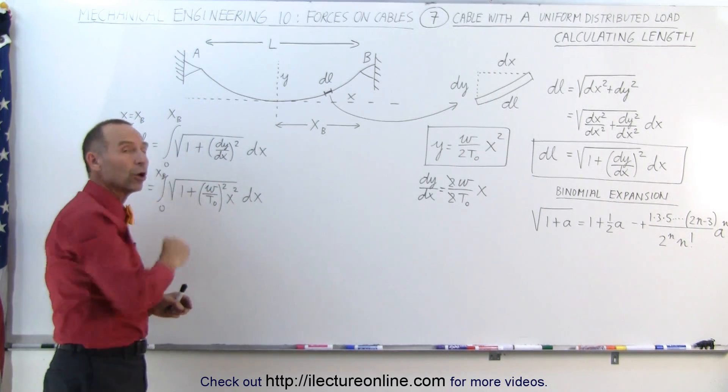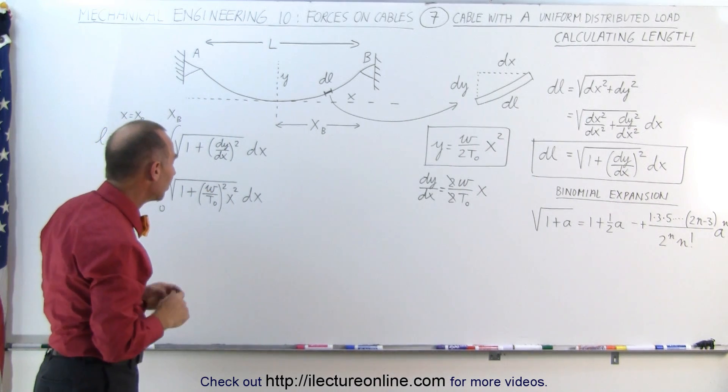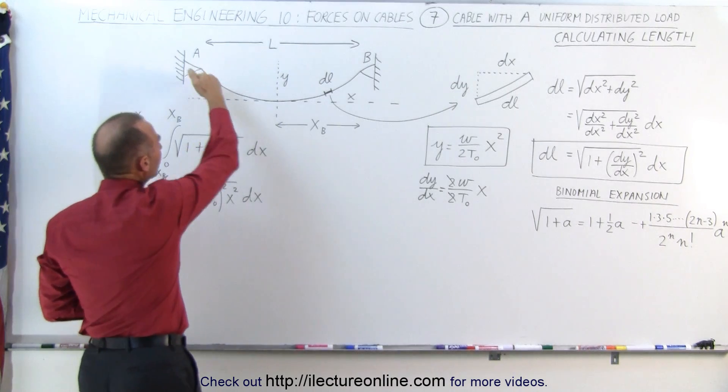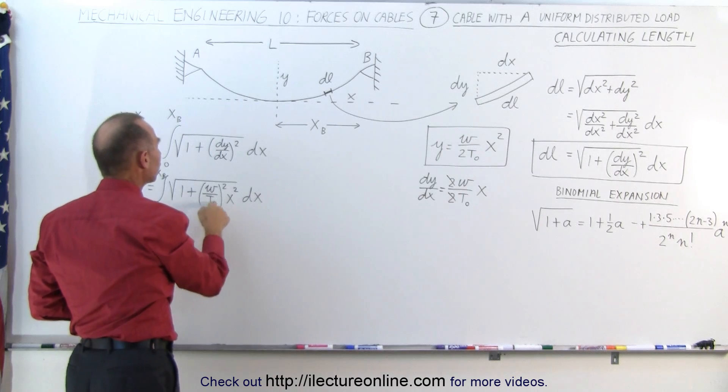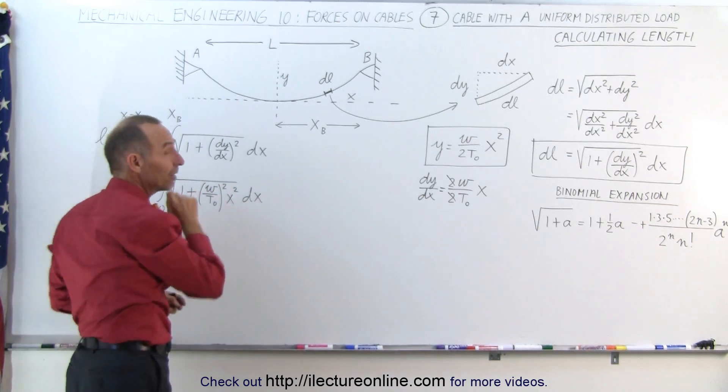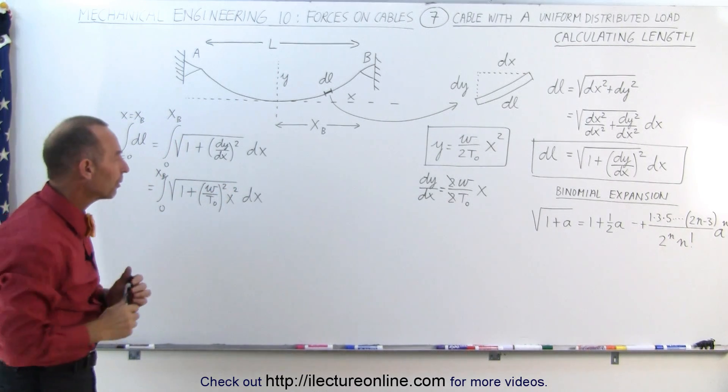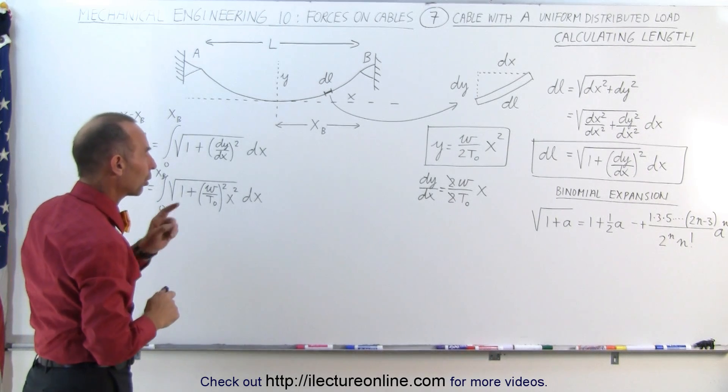The binomial expansion may no longer work. But in a typical scenario where the cable doesn't sag too much, then T sub naught will be sufficiently large that this is a very small quantity, especially when it's squared, and therefore the binomial expansion will work.